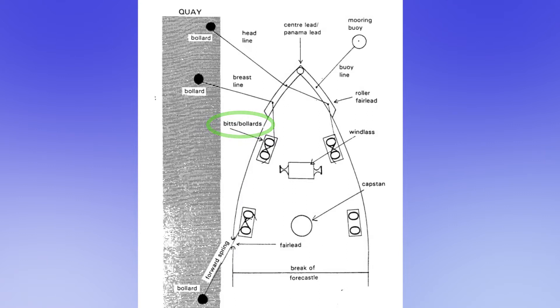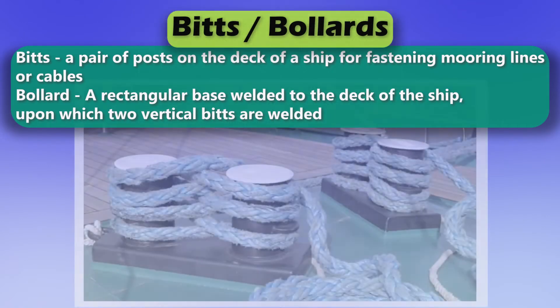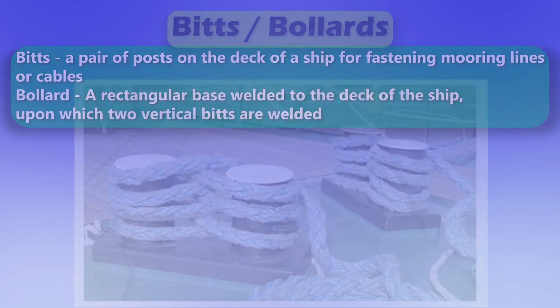Bits and Bollards. Bits is a pair of posts on the deck of a ship for fastening mooring lines or cables. Bollard is a rectangular base welded to the deck of the ship, upon which two vertical bits are welded.